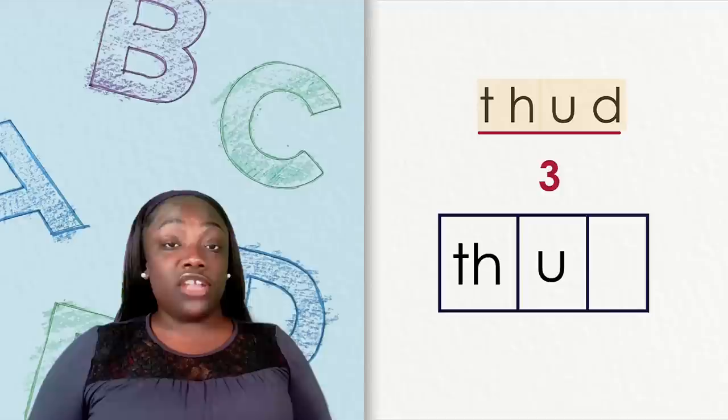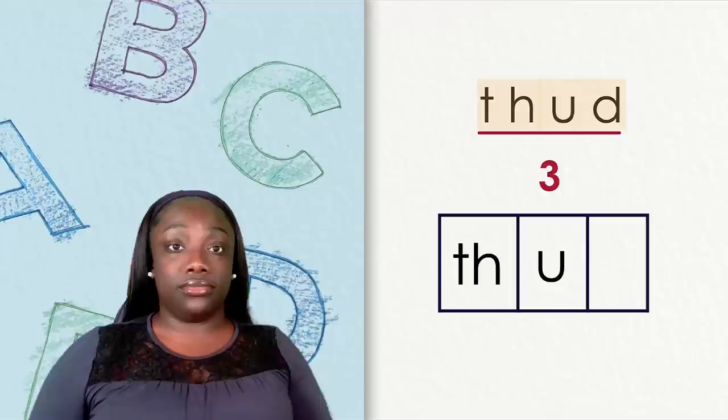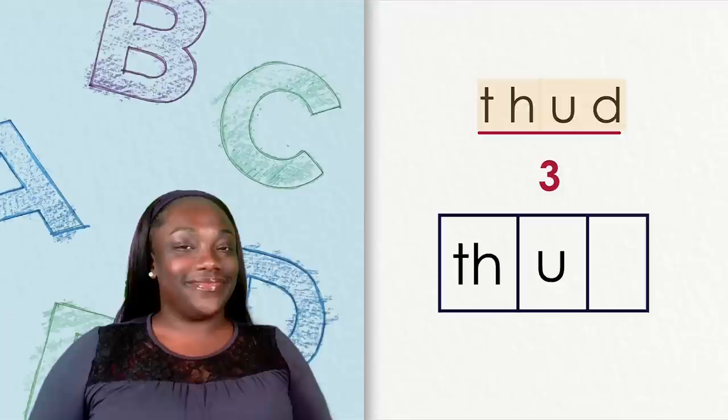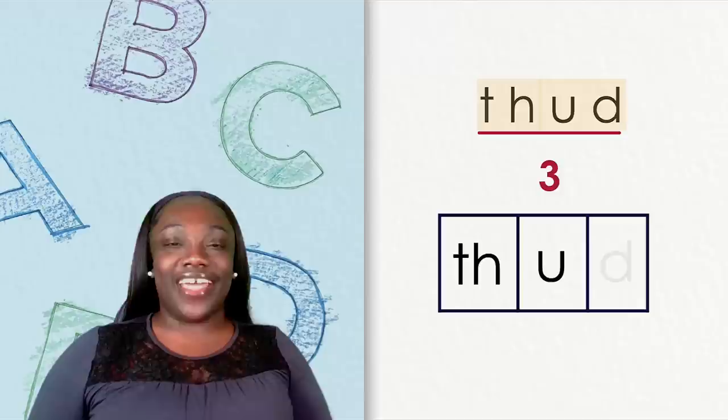If you thought uh is spelled with the letter U, you're right, so we put that letter in the middle box. Let's do another word: lash. The final sound is d. What letter makes the d sound? If you thought D you are correct, so we place that in the last box.